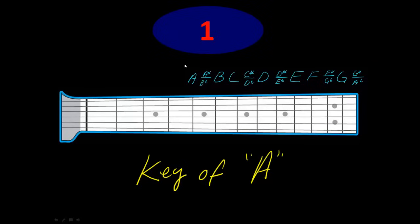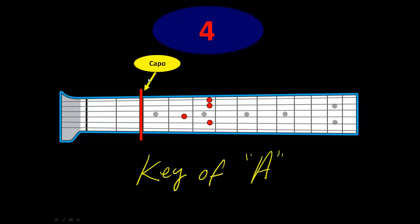So from G to A that's two steps. So if I just took my capo and raised it one, two steps on the guitar and played the same chords that I did when it was in G, I would now be playing in the key of A. So there's my one chord, there's my four chord, there's my five chord, there's my six chord.